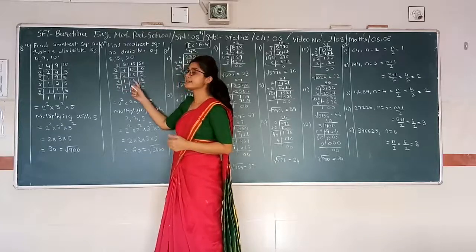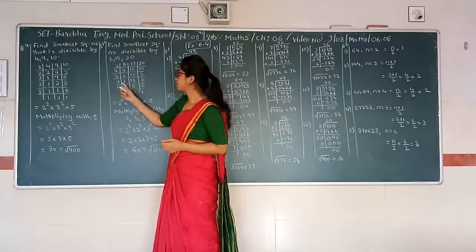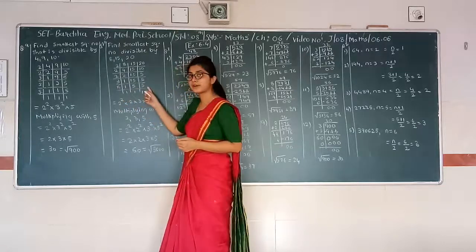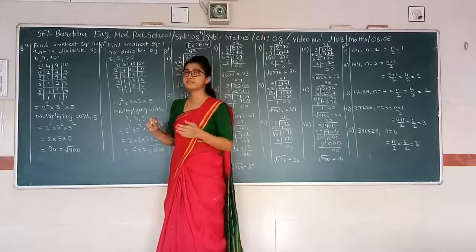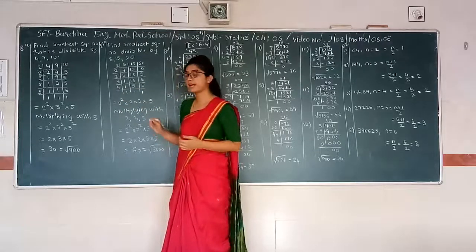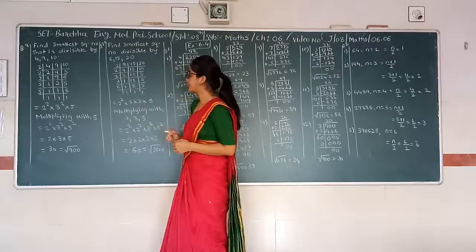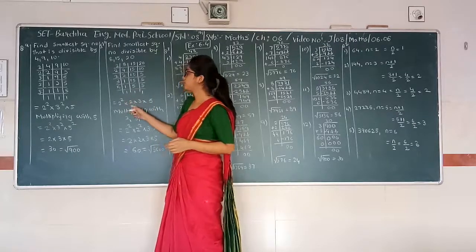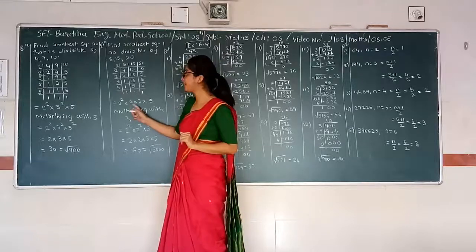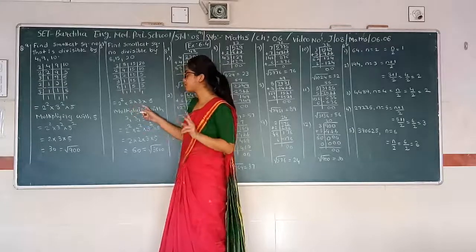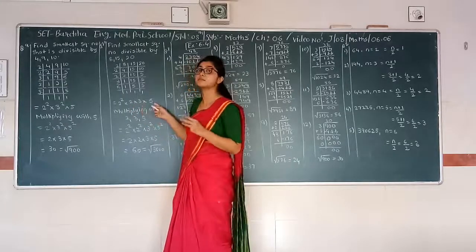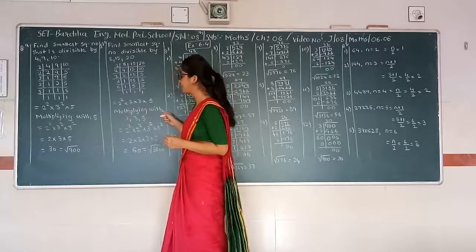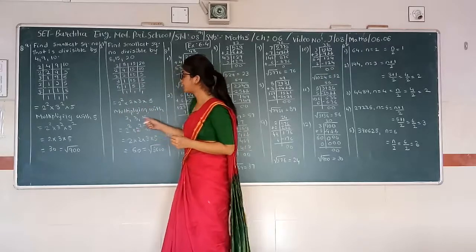Again divided by 2: 2 gives 1, 15 and 5 remain. Now 15 is divisible by 3. Therefore, dividing gives 5 and 5. Then 5 and 5 are divisible by 5, giving 1 and 1. Now we have one pair of 2, but another 2 is not in a pair. 3 is also not in a pair and 5 is also not in a pair. So we have to multiply by 2, 3 and 5.